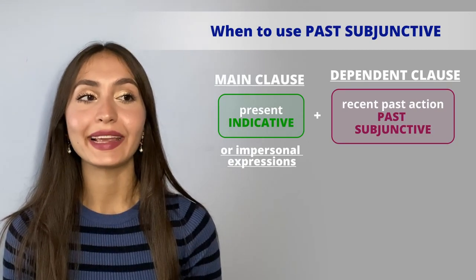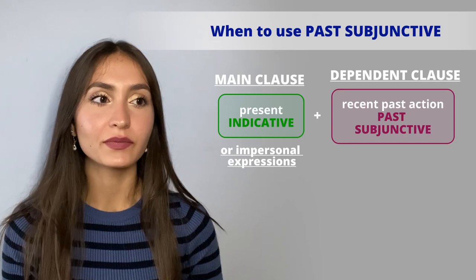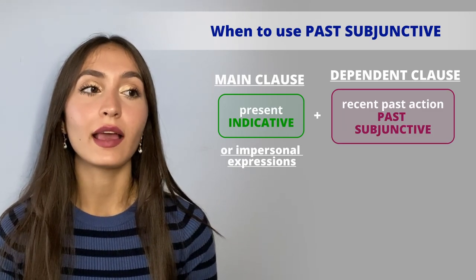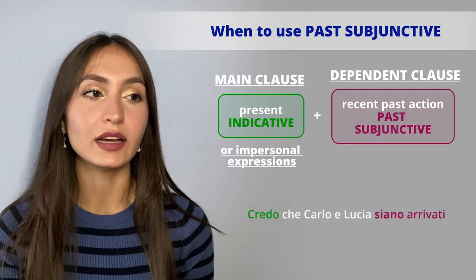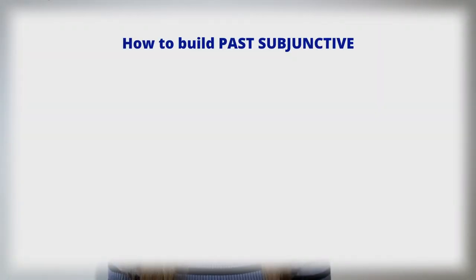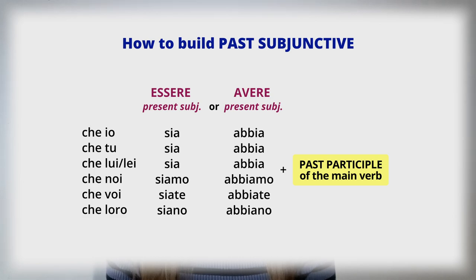Now it's time to talk about the past subjunctive. It is used in dependent clauses introduced by 'che' to express the speaker's emotions, wishes, or doubts towards a recent past action, or after the impersonal expressions mentioned before but referring to the past. The verb in the main clause is always in the present indicative. For example: 'credo che Carlo e Lucia siano arrivati'; 'dubito che la loro squadra abbia vinto.' The past subjunctive is built using the present subjunctive of 'essere' or 'avere' plus the past participle.